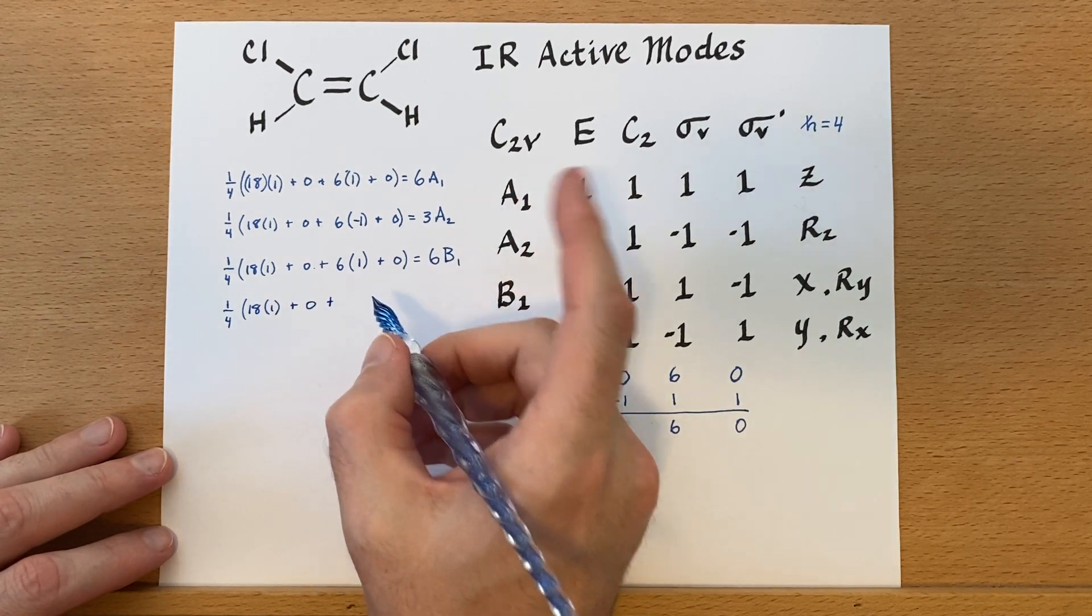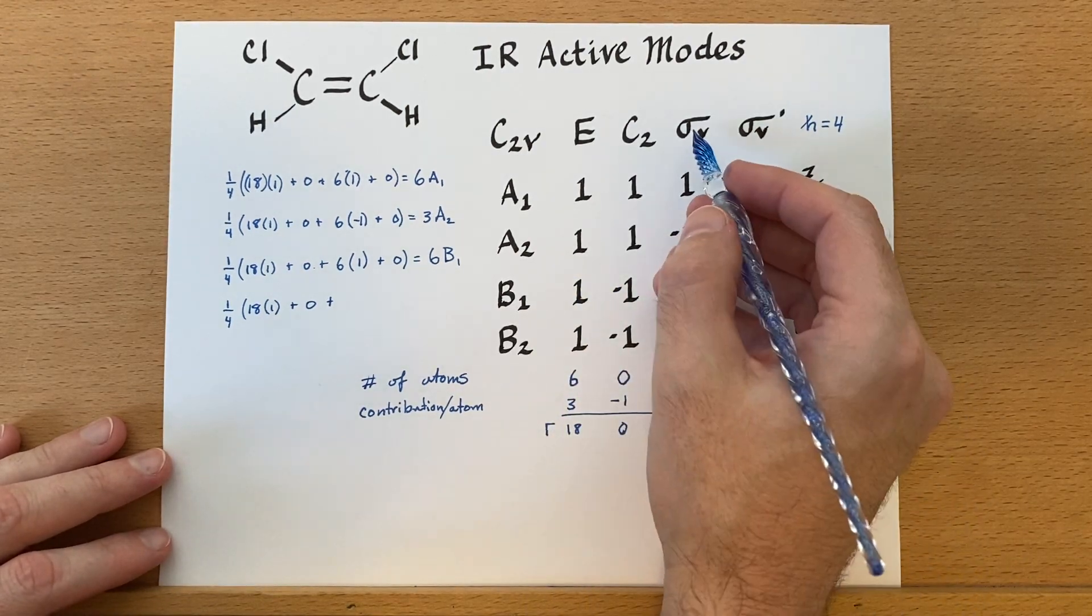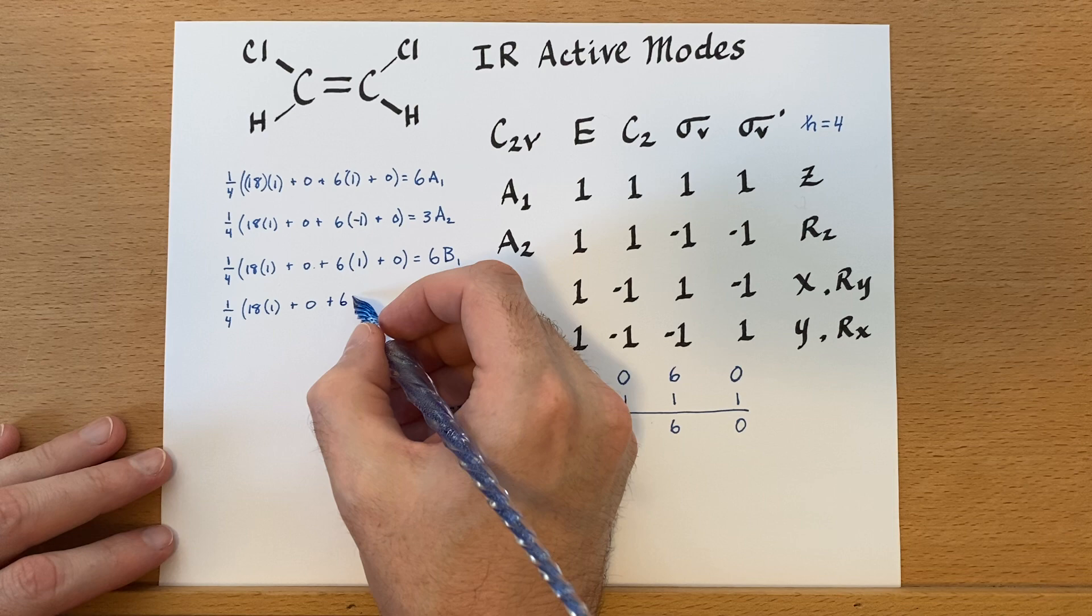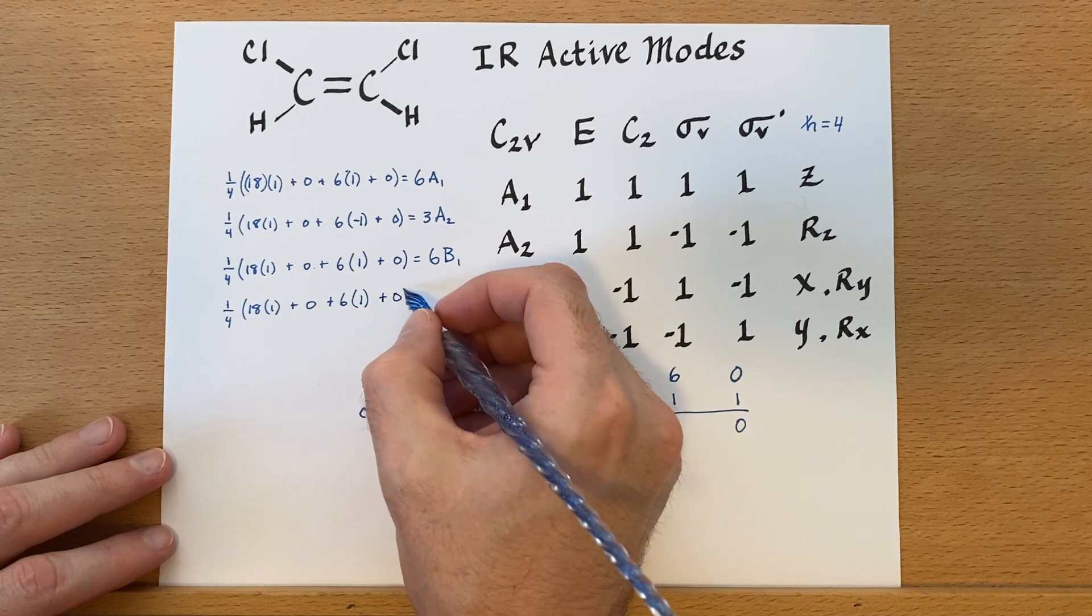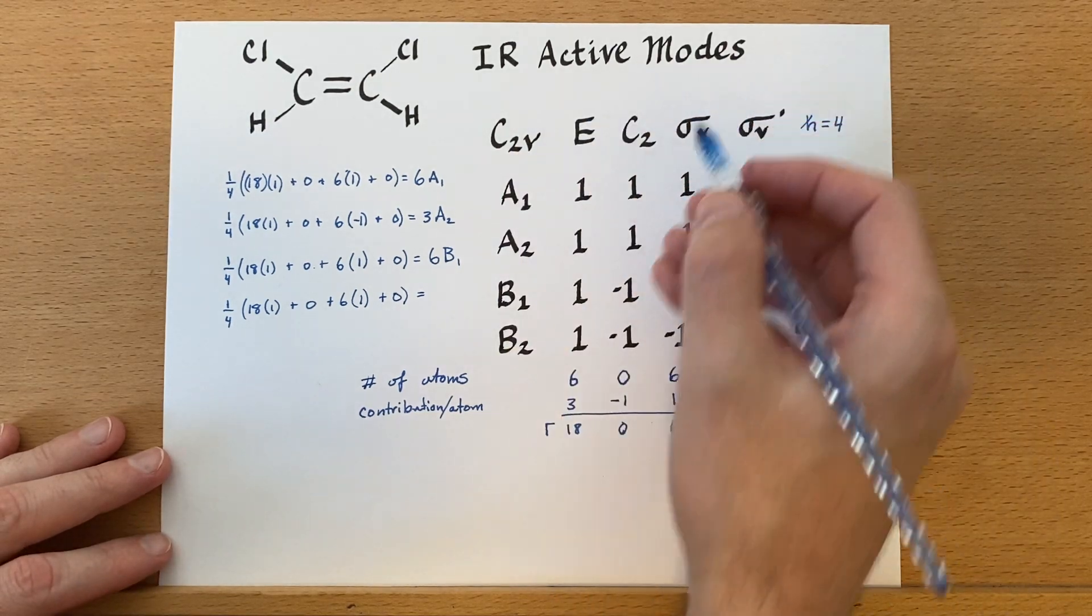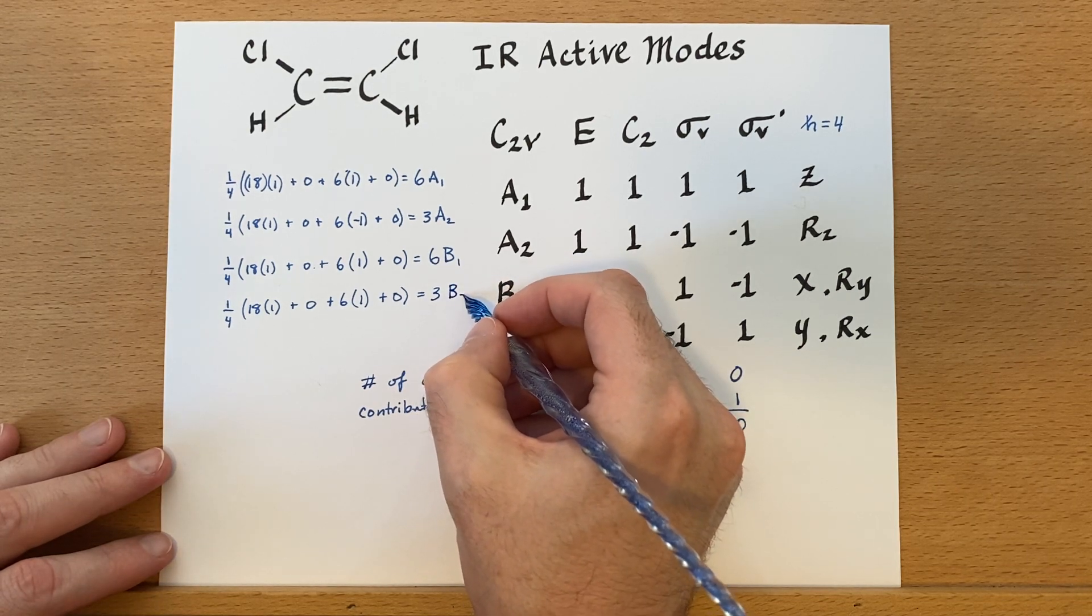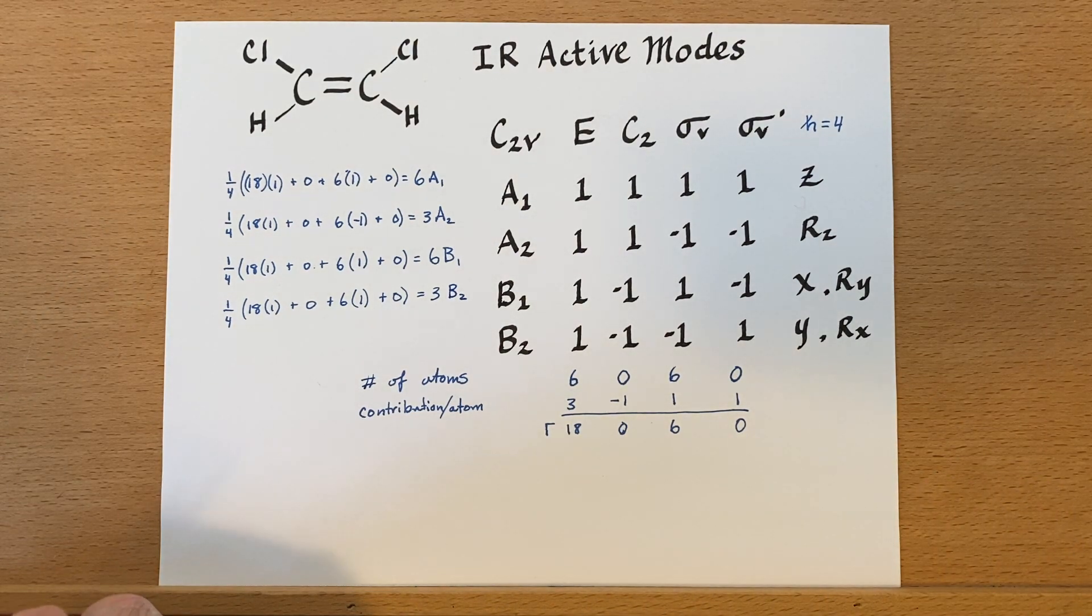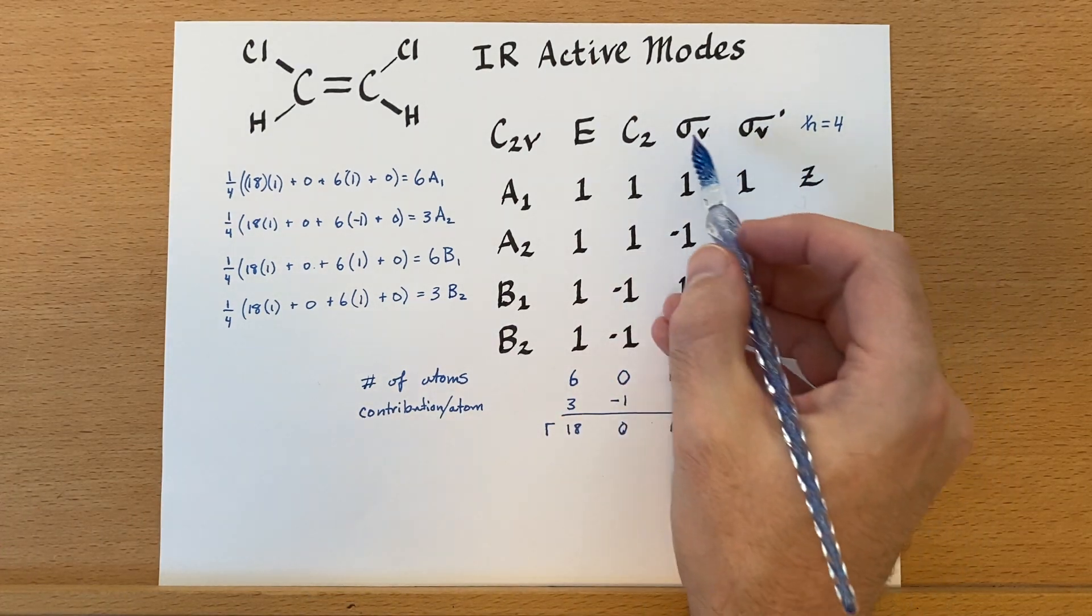Now, while I'm writing this out, I should point out that although convention and a lot of people will make this first sigma be the one that contains the most atoms within that plane, if you do it the other way, you will still get the same answer in terms of the number of IR active modes. And when you ultimately end up drawing the different IR active modes, it will come out the same.